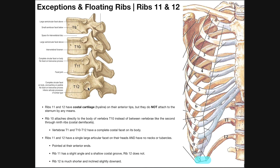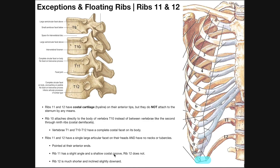Neither ribs eleven nor twelve have tubercles because they don't articulate with the transverse processes of T11 and T12 — and in fact, T11 and T12 do not have transverse costal facets like T9 and T10. Ribs eleven and twelve are also more pointed at their anterior ends. Rib eleven has a slight angle and a shallow costal groove, whereas rib twelve has neither — it is very short, much shorter than rib eleven, and inclined slightly inferiorly. Regarding another exception: rib number ten attaches directly to the body of T10 in some individuals, rather than between vertebrae like ribs two through nine.